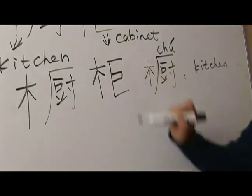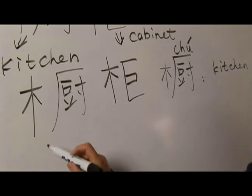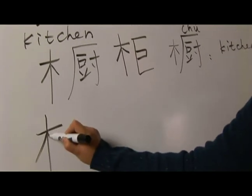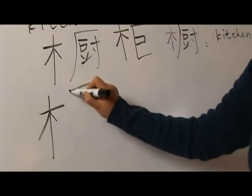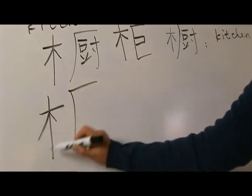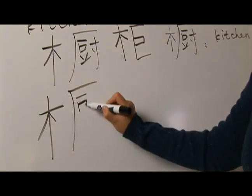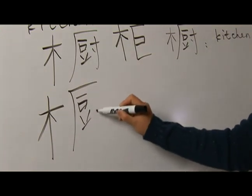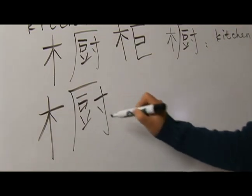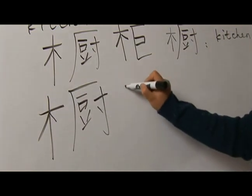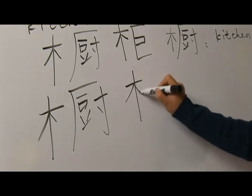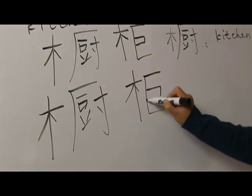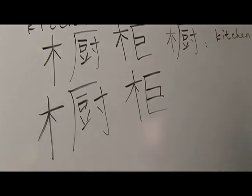This is 厨, okay. Last time, let's write them. Don't forget the wood radical here. A short rising. 厨櫃 — cupboard.